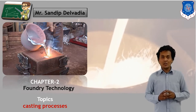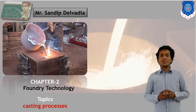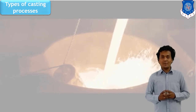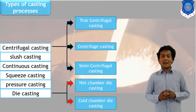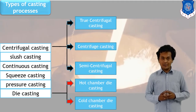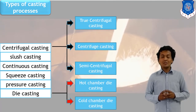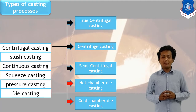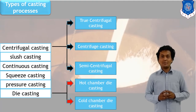Let us start our discussion on various casting processes. Here I have listed the processes we are going to discuss: centrifugal casting, slush casting, continuous casting, squeeze casting, pressure casting, and die casting. Our purpose in the casting process is to cool and solidify the metal so that our final product will be ready.